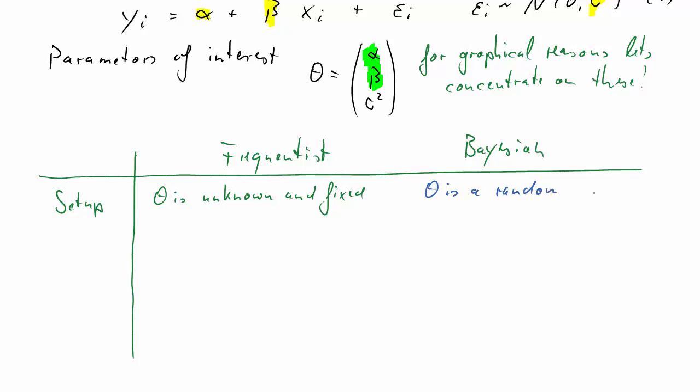A Bayesian, however, would say that theta is a random variable. So it doesn't make sense to only talk about one true fixed value of theta. There are many values of theta that would be possible.